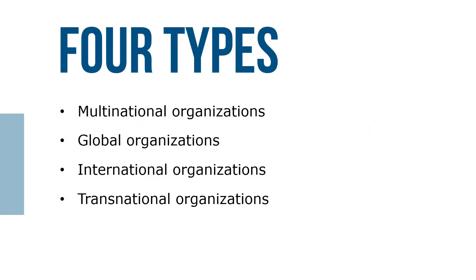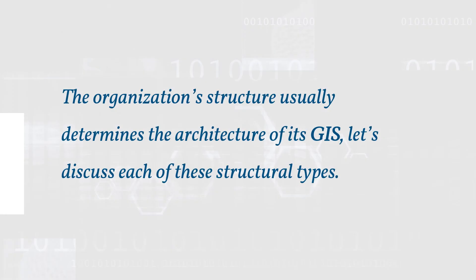There are four types of global organizational structures: multinational organizations, global organizations, international organizations, and transnational organizations. The organization's structure usually determines the architecture of its GIS. Let's discuss each of these structural types.